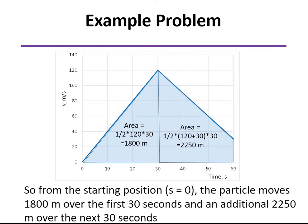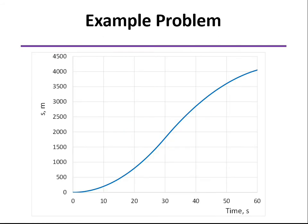So the total distance traveled will be the sum of those two. We move 1,800 meters over the first 30 seconds, and an additional 2,250 over the final 30 seconds. And based on that, we can draw the ST curve. So notice, at 30 seconds, our value is at the 1,800, and at 60 seconds, we're at that final value of 4,050.